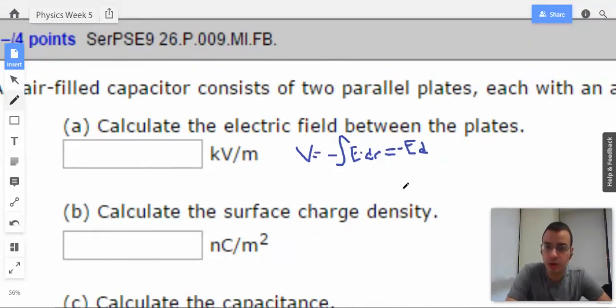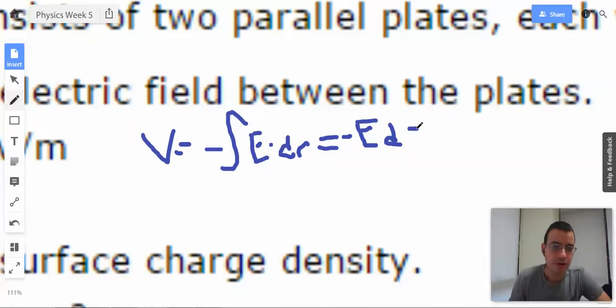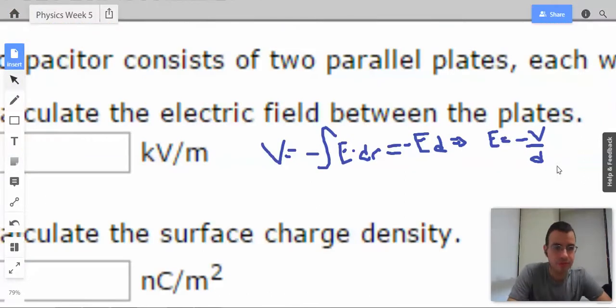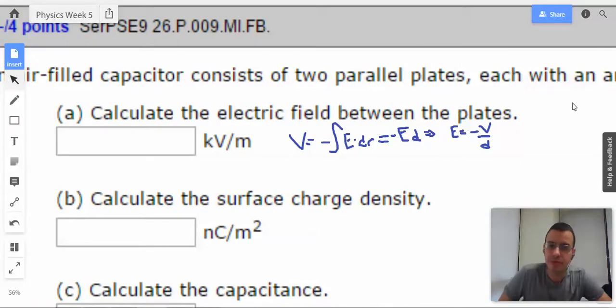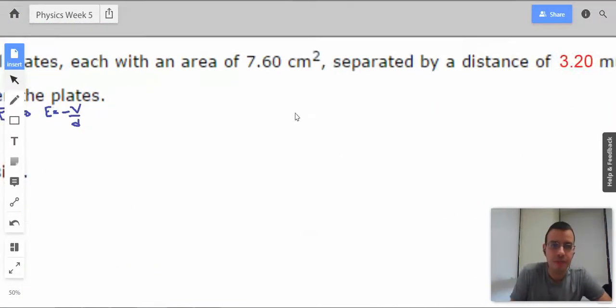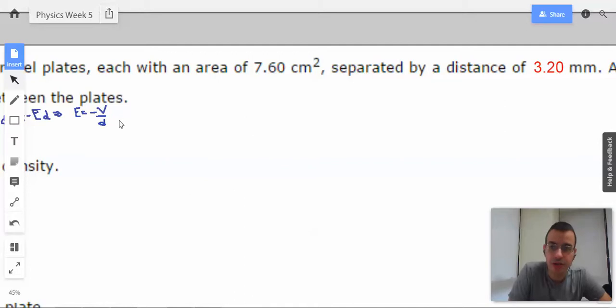We want to find the electric field, so we rearrange this equation. We find that electric field equals negative V over D. Super easy. I don't know if they want the negative in there or not. I'll put it in there, but they might not want it.